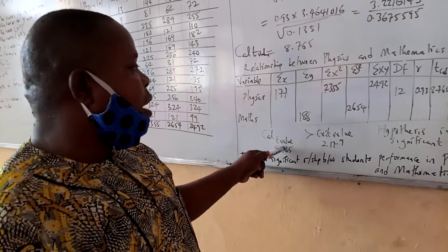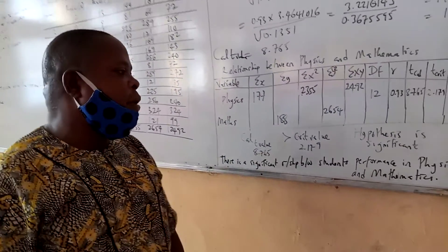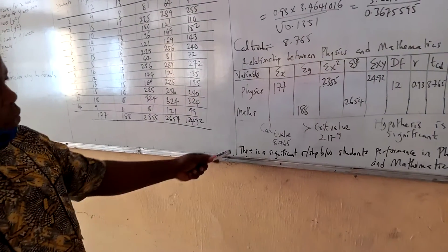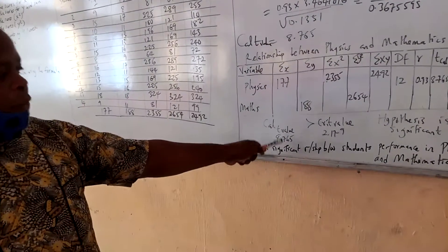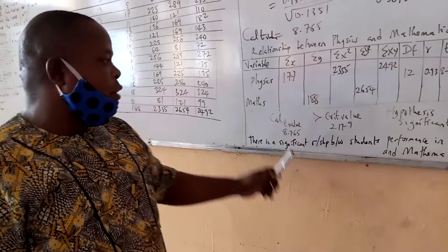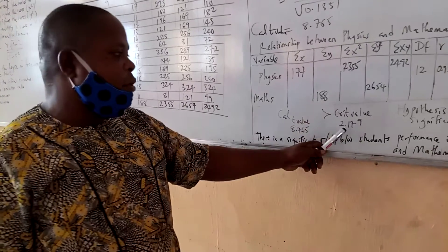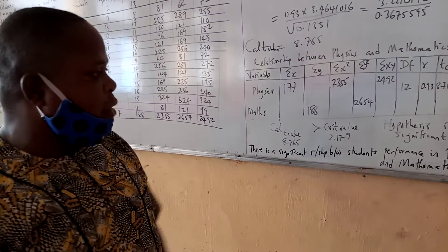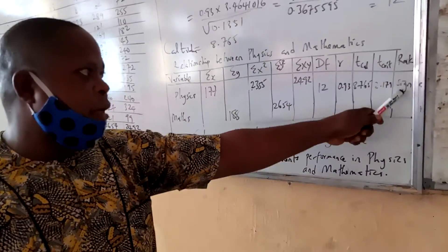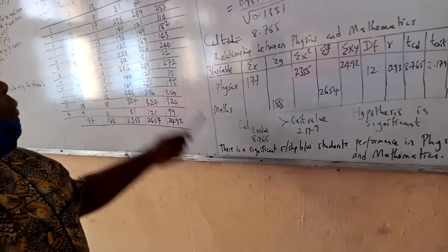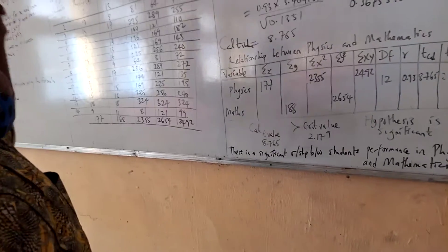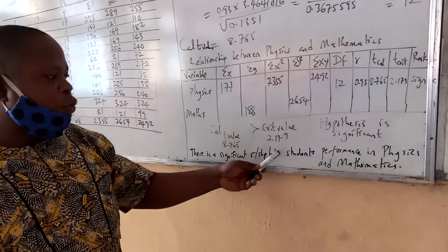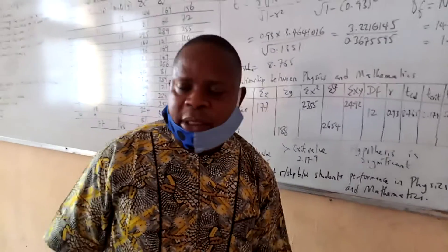Since the calculated t-value is greater than the critical t-value — the calculated t is 8.765 while the critical value is 2.179 — the result is significant. Therefore, the null hypothesis is rejected, and we accept the alternate hypothesis: there is a significant relationship between students' performance in physics and mathematics.